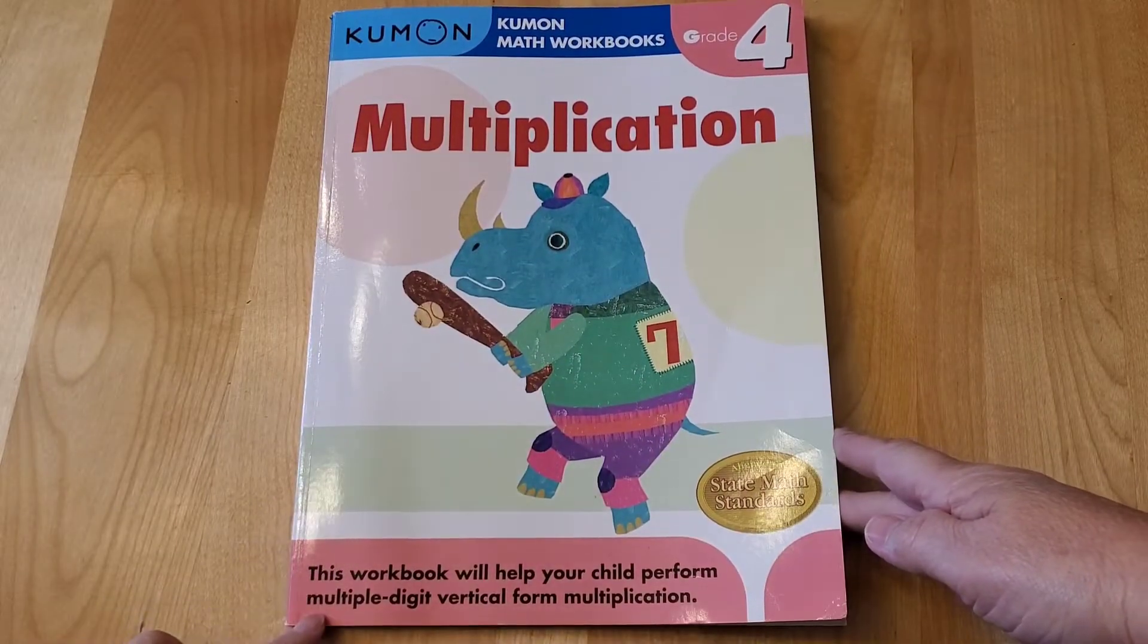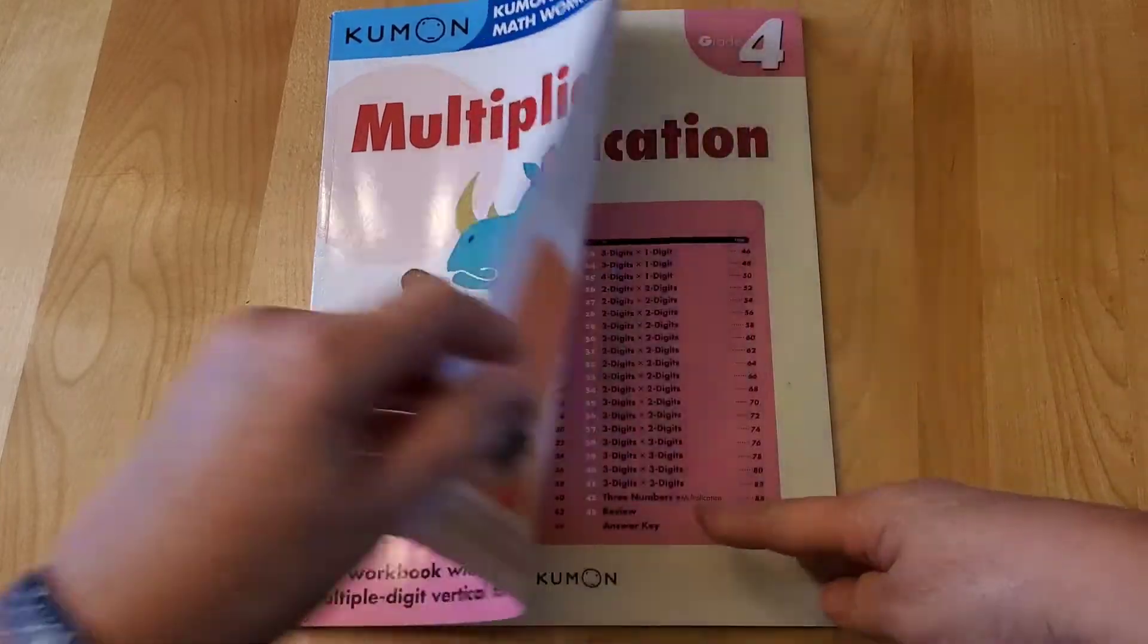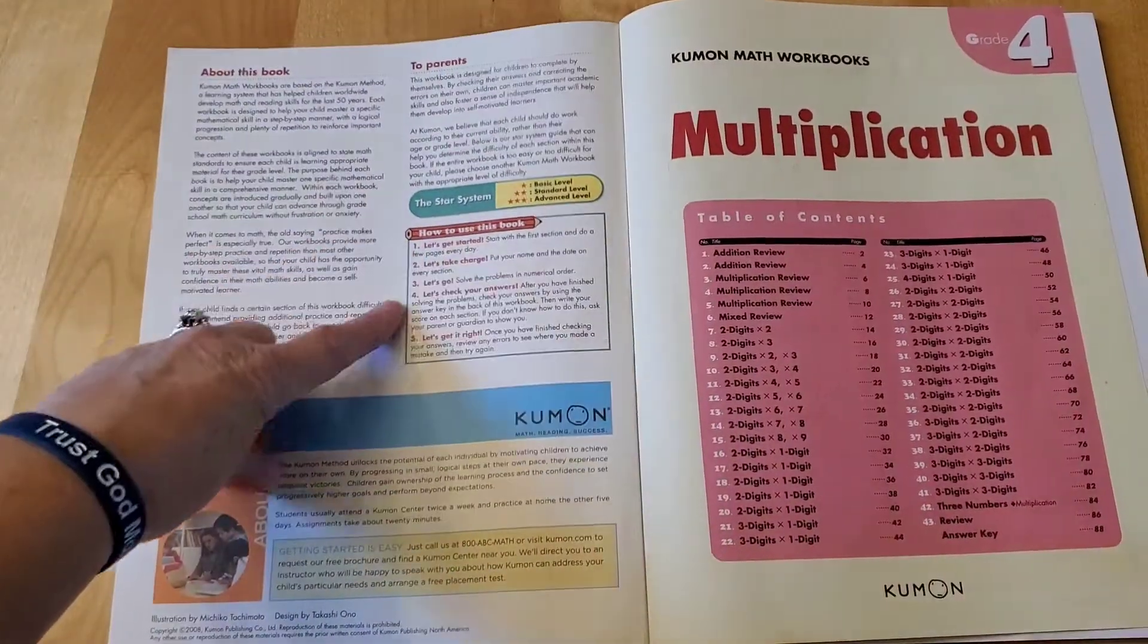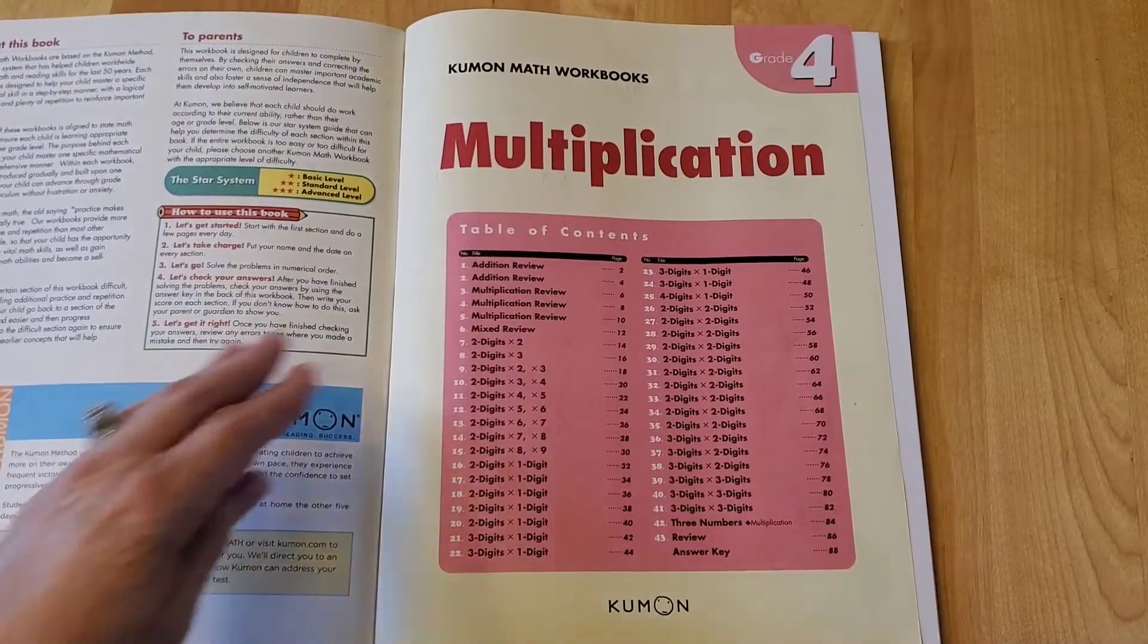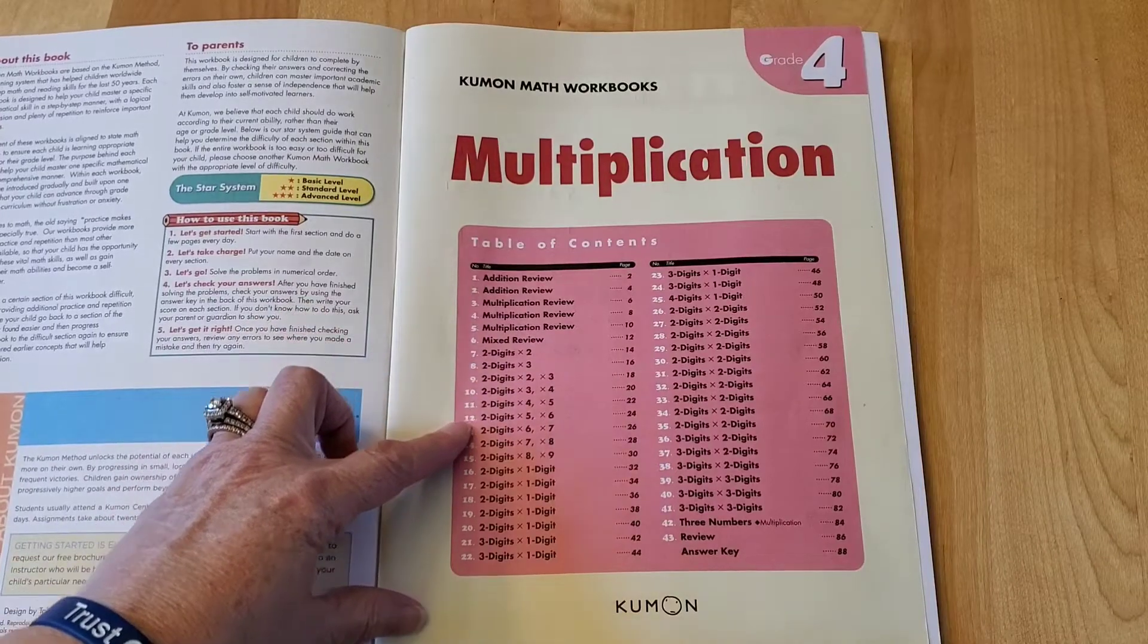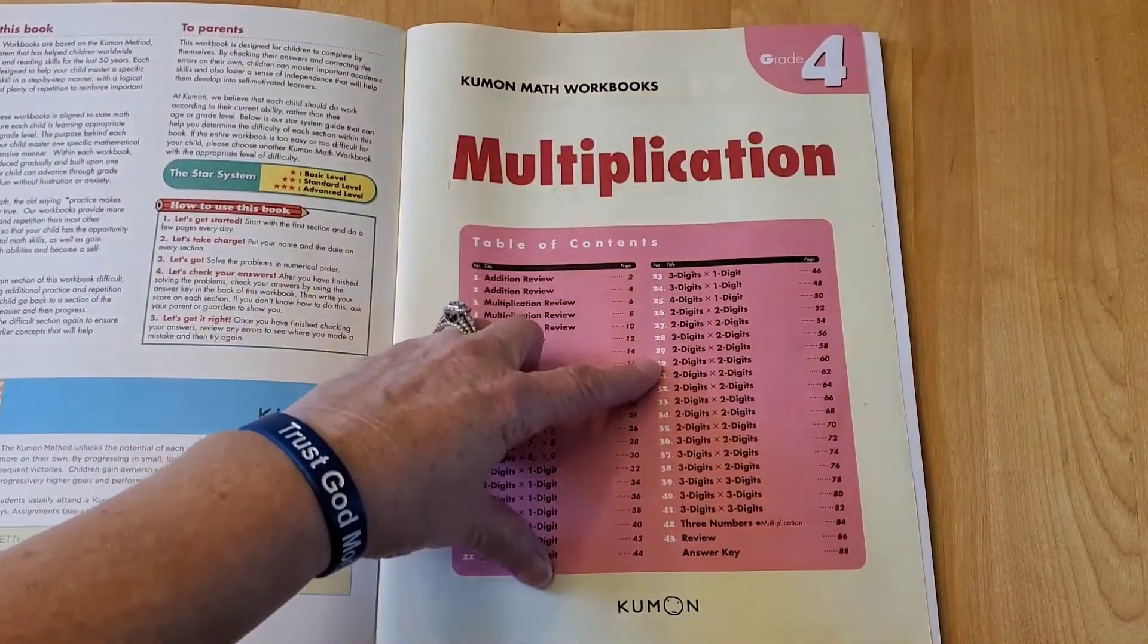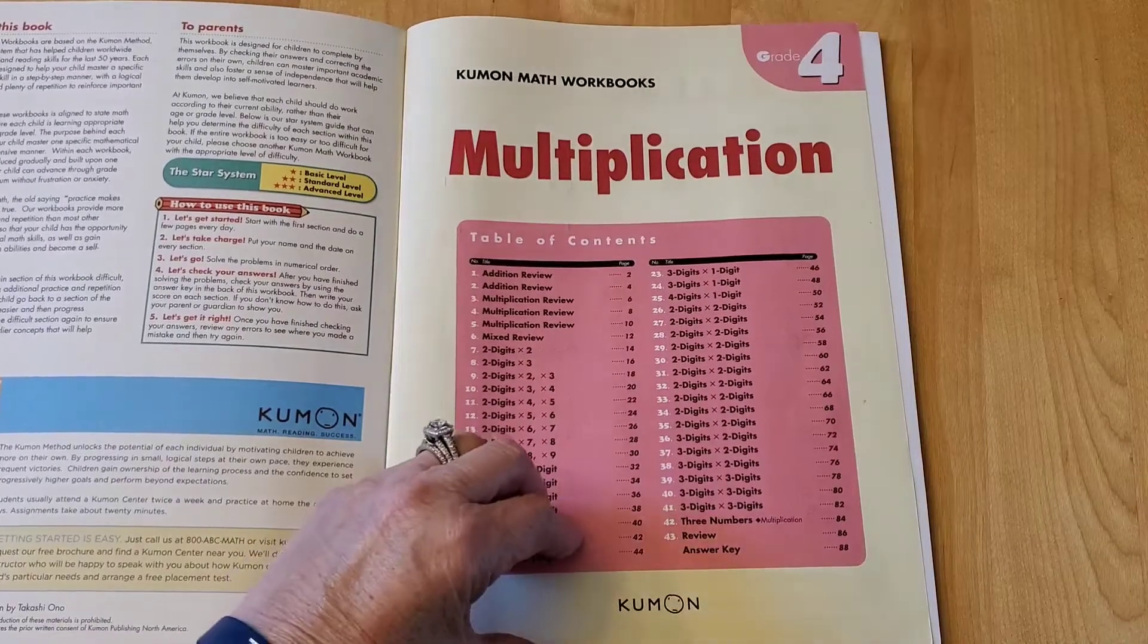So it says this workbook will help your child perform multiple digit vertical form multiplication. Here it tells you all about the book, to the parents, how to use the book, about Kumon. Here's a table of contents: addition review, multiplication review, goes into the two times tables with two digits, three digits, one digit, etc. You can read all this on your own.